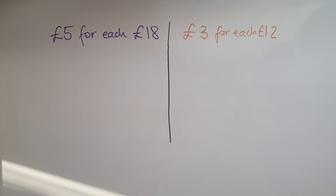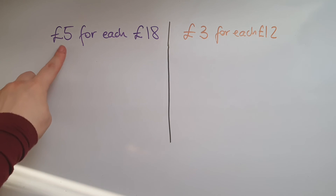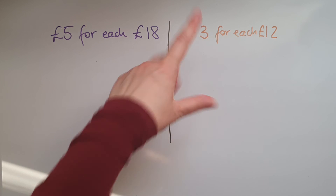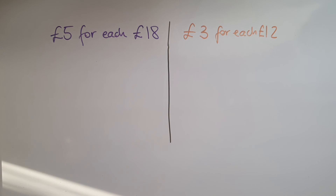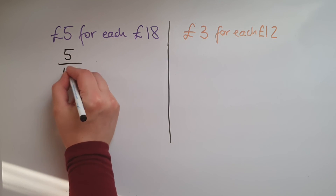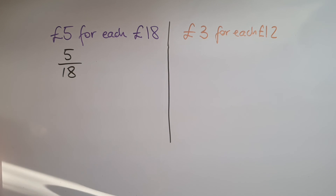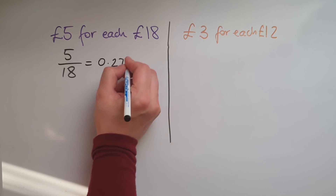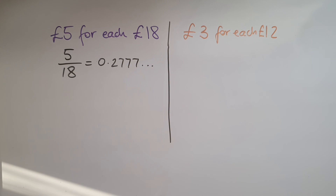Here is another example. If you sell two products: one of them costs 18 pounds and you make five pounds profit for each one. Another one costs 12 pounds and you make three pounds profit for each one. So which one works out better? Five out of 18, which is five divided by 18, gives us 0.2777 with the seven recurring.